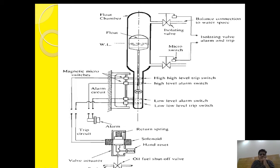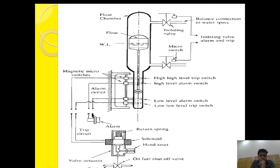Suppose the water level inside the boiler is decreasing — the float will move down, and as it moves down, the magnet will also move down. When it reaches the low level alarm switch position, it will complete the alarm circuit through a micro switch, indicating low water level inside the boiler and activating the low water level alarm.